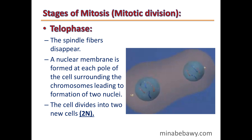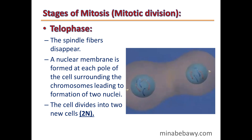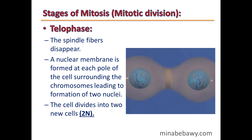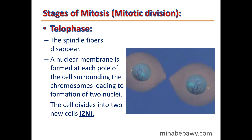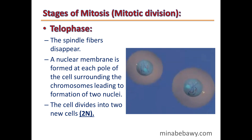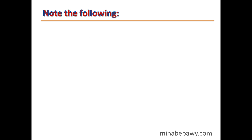The final phase is telophase. The spindle fibers disappear, a nuclear membrane is formed at each pole of the cell surrounding the chromosomes, leading to the formation of two nuclei. The cell then divides into two new diploid cells, each containing the complete copy of chromosomes — 2N.